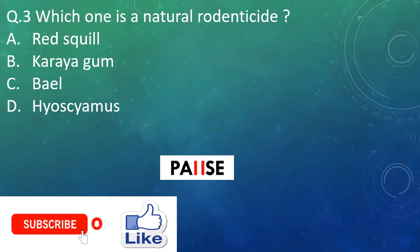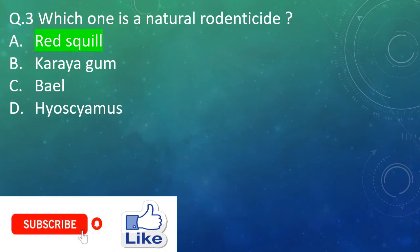Question three: Which one is a natural rodenticide? Option A: Red squill. Option B: Caraya gum. Option C: Higher cybers. And the right answer is Option A: Red squill.